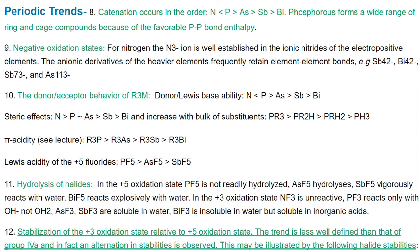Other periodic trends include catenation, which occurs in the order: nitrogen, then phosphorus, which is greater than arsenic, which is greater than antimony, and antimony has increased catenation compared to bismuth. Phosphorus forms a wide range of ring and cage compounds because of the favorable phosphorus–phosphorus bond enthalpy.